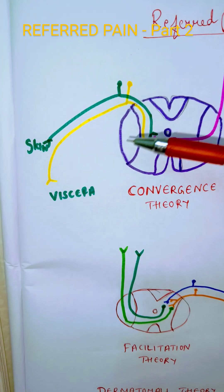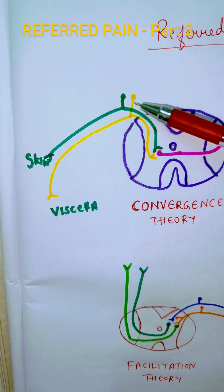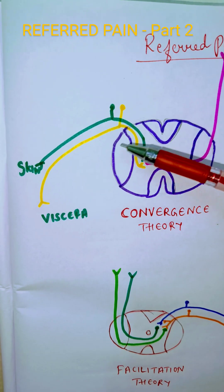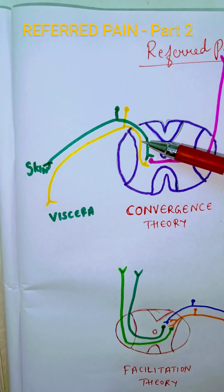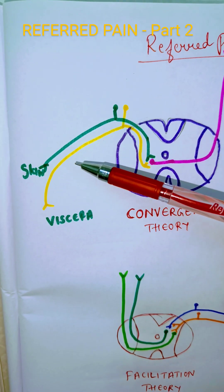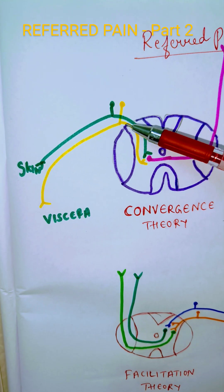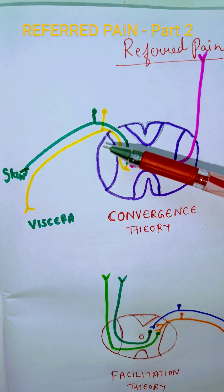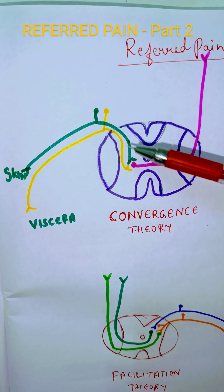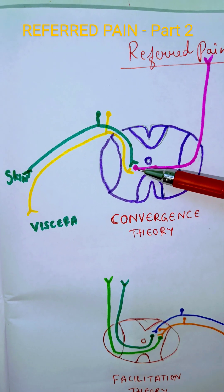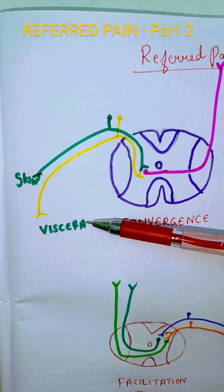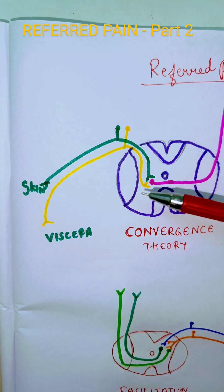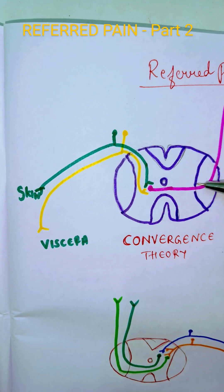The first is convergence theory. There is a nerve (yellow) which carries pain sensation from the viscera, and it stimulates the second order neuron. The yellow and green colors represent the first order neurons of the pain pathway. From the viscera and from the skin, the pain impulses come and stimulate the same second order neuron — so the pathways are converging onto the same second order neuron.